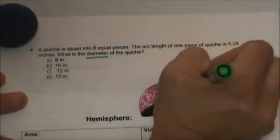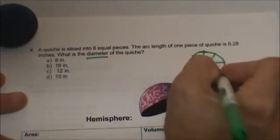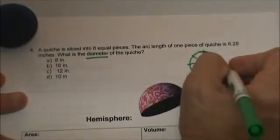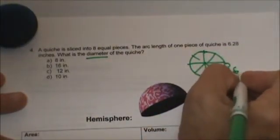Let's draw a picture. I have a quiche and I have 8 slices, and then the length of the arc of one piece, one of these little pieces, is 6.28 inches.